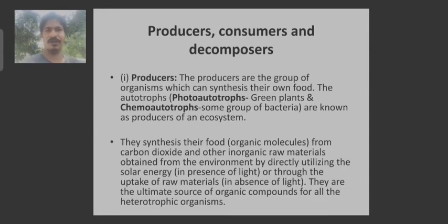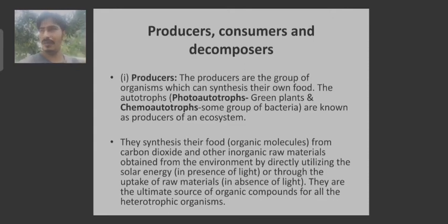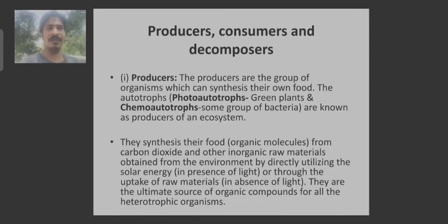Autotropism can be divided into two categories. First is photo-autotrophs — preparation of food with the help of light, where 'photo' is related to light. Second is chemo-autotrophs — autotropism related to the chemical intake of inorganic substances as raw materials for the preparation of food, where no light is required.